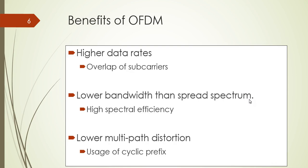So the benefit of OFDM is three-fold, mainly. The first one is higher data rates. And the second one is lower bandwidth than spread spectrum. In other words, it has high spectrum efficiency. And the third one is it lower multipath distortion because it uses the cyclic prefix or the guard interval.